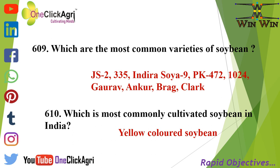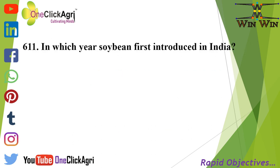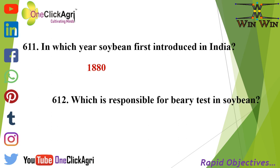Soybean was first introduced in India in the 18th century. The compound responsible for the beany taste in soybean is a sulfur compound.